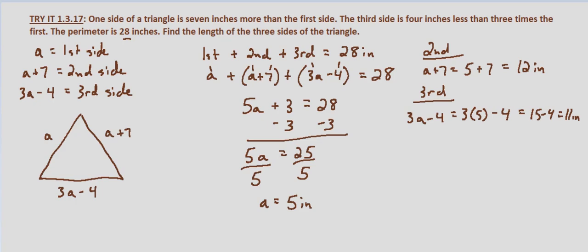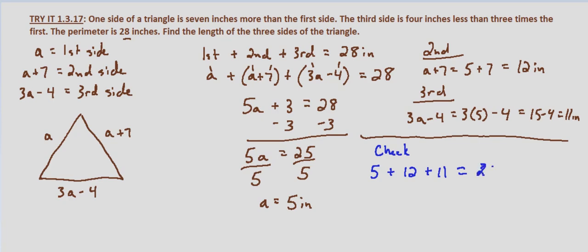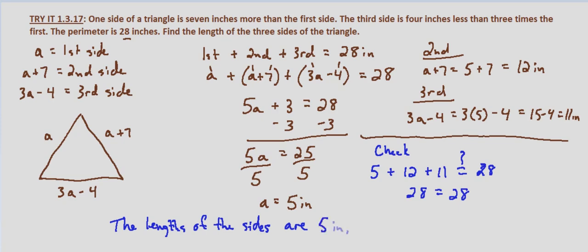To check, let's verify that the perimeter is indeed 28 inches: five plus 12 plus 11 — does that equal 28? That's 17 plus 11, which does indeed equal 28. So the lengths of the three sides are five inches, 12 inches, and 11 inches.